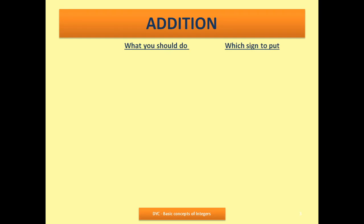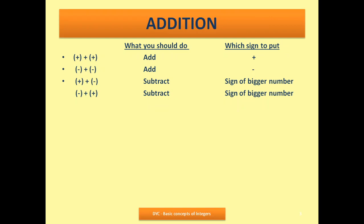If you understood the multiplication rules, it is easier to understand addition — that is why I taught multiplication first. For addition, again there are two things: what to do and which sign to put. When both values are plus and there is a plus sign in between, you will add and simply put the plus sign. In the second case, when both numbers are negative — say minus 7 plus minus 6 — you will add but put the sign of minus.